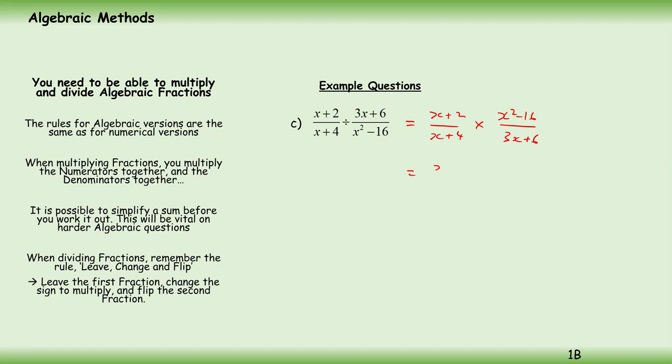Now we've got x plus 2 over x plus 4—these cannot simplify any further, but these two can. X squared minus 16 again. We're looking at difference of two squares. That means we've got x plus—what times what gives me 16? X plus 4, x minus 4. And on the bottom, if we factorize that, what's common to 3x and 6? The 3. X plus—3 times 2 equals 6—so 2.